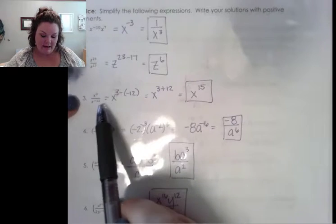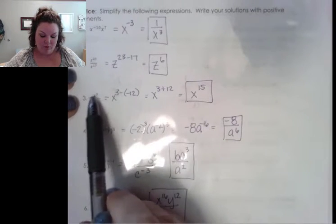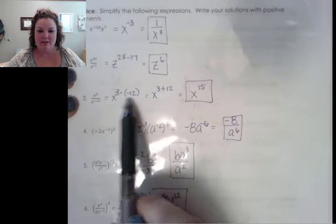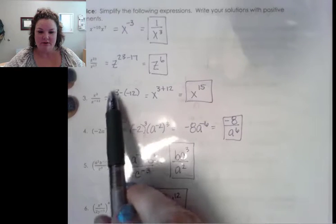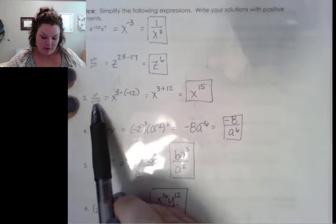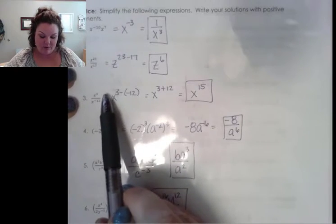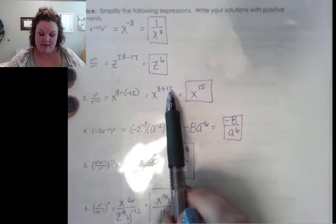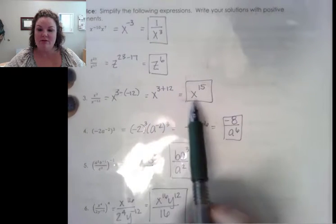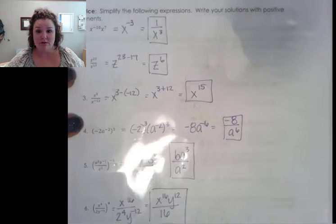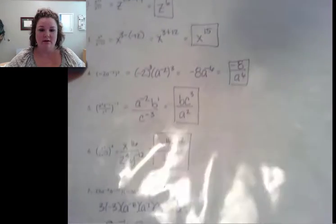Number 3: you can move the negative 12 up. Think about it as x cubed on top, and when we bring up that negative 12, it becomes a positive 12. So we combine the 3 and the positive 12, which gives us x to the 15. If I'm going fast, remember you can slow the video down or pause it to work through each one.